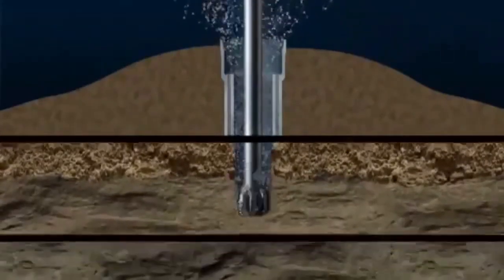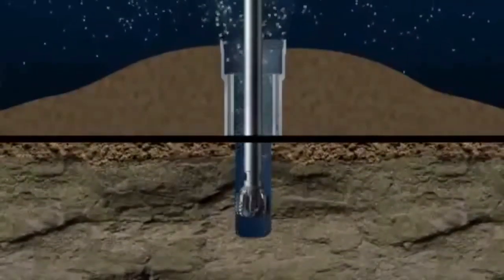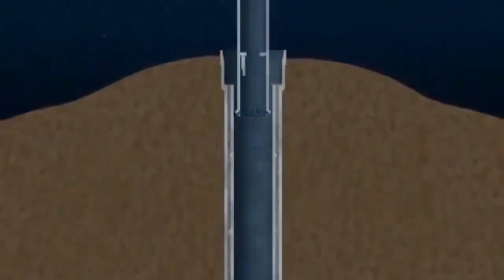After a suitable depth has been drilled, the drill string is removed. Then steel tubing, known as casing, is lowered into the hole and cemented in place.